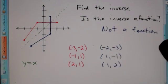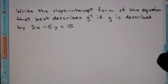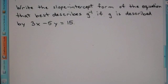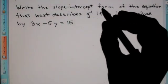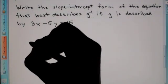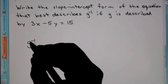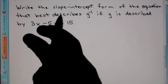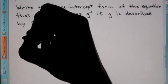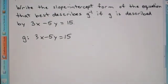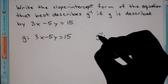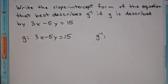Here we have: write the slope-intercept form of the equation that best describes g inverse. Now, the negative 1 here doesn't actually mean the exponent negative 1 — this is notation for inverse. So when you see g to the negative 1, that's actually saying the inverse of g. We know that g is 3x minus 5y equals 15, and we're trying to find the inverse of g. This is just notation, not an exponent.